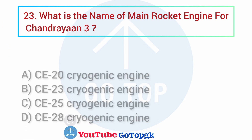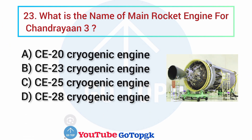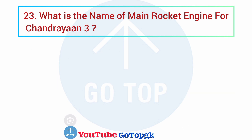Question No. 23. What is the name of the main rocket engine for Chandrayaan-3? Options: A. CE-20 cryogenic engine, B. CE-23 cryogenic engine, C. CE-25 cryogenic engine, D. CE-28 cryogenic engine. Your correct answer is option A: CE-20 cryogenic engine.